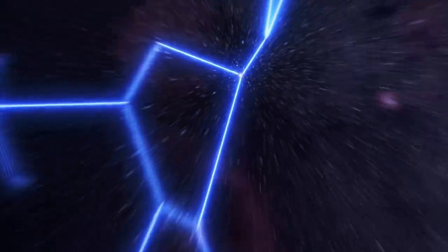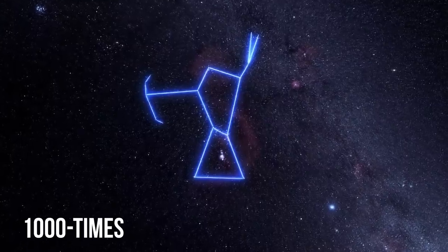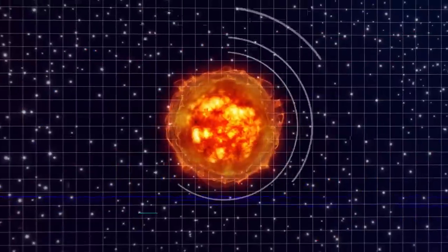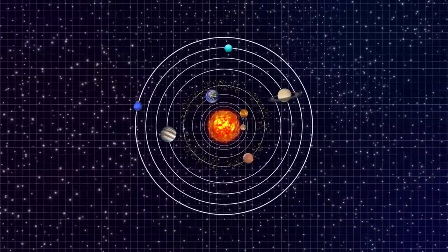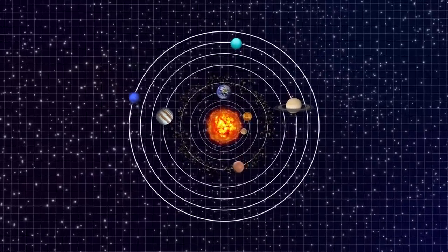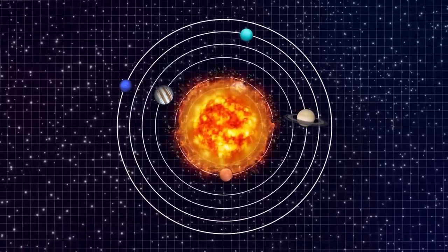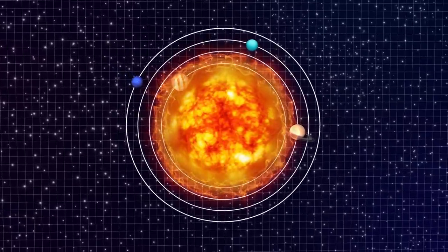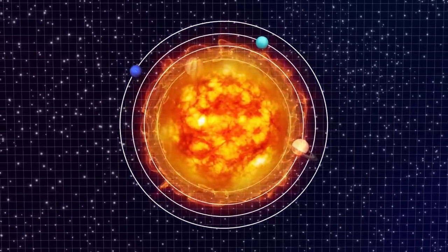Betelgeuse is a red supergiant star in the constellation of Orion that is roughly 1,000 times larger than the Sun. If you put this solar giant where the Sun is in our solar system, its surface would lie beyond the asteroid belt, and would engulf the orbits of Mercury, Venus, Earth, Mars, and perhaps even Jupiter.